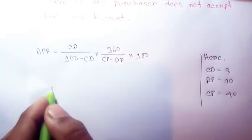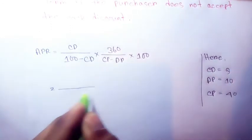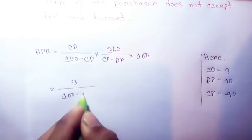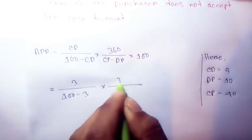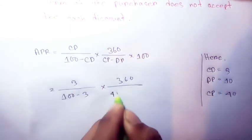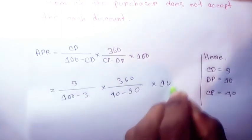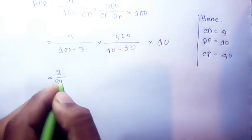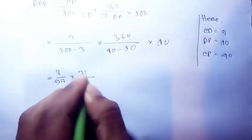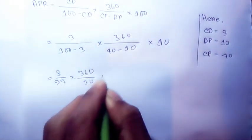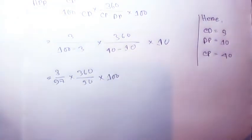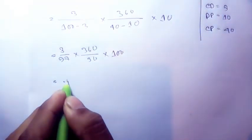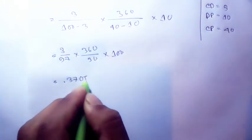Substituting the values: 3 divided by (100 minus 3), multiplied by 360 divided by (40 minus 10). That gives us 3/97 multiplied by 360/30, which calculates to approximately 37.08 percent.